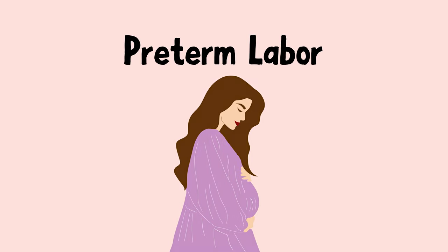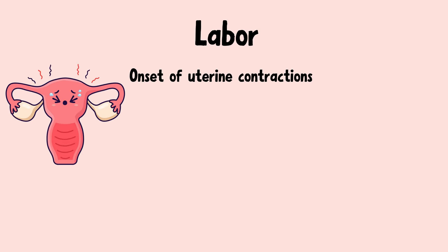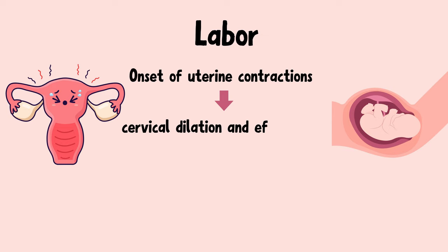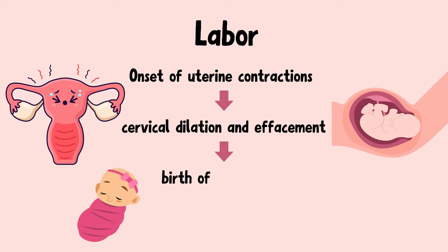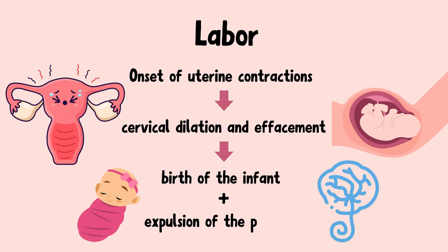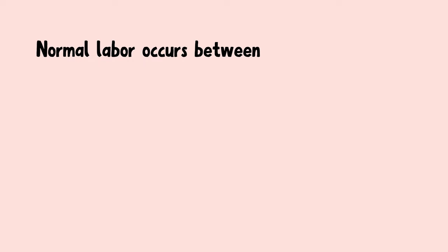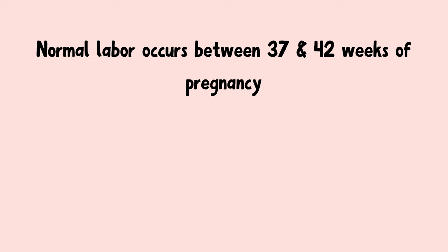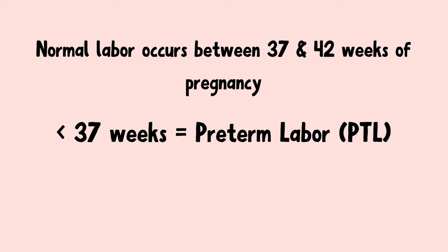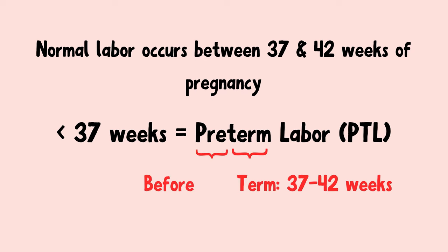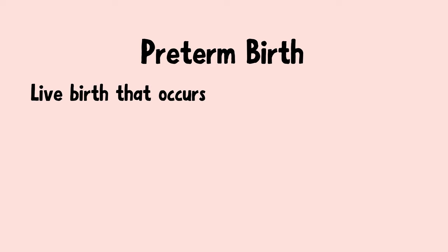Labor is the onset of uterine contractions that lead to progressive cervical dilation and effacement, eventually resulting in the birth of the infant and expulsion of the placenta. Normal labor typically occurs between 37 and 42 weeks of pregnancy. If it happens before 37 weeks, we call it preterm labor, as it happens pre — before term. Term refers to 37 to 42 weeks. A preterm birth refers to a live birth that occurs between 20 and 36 weeks.